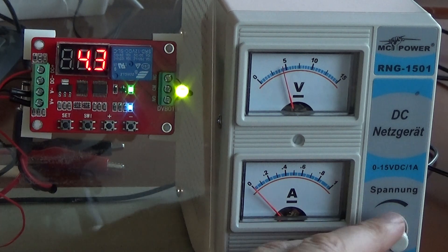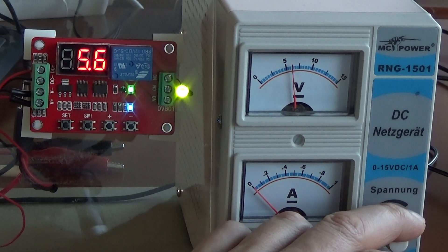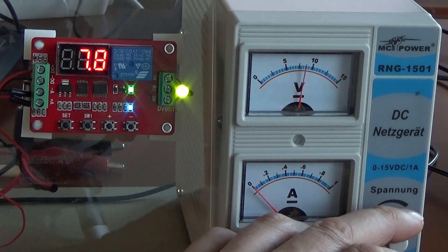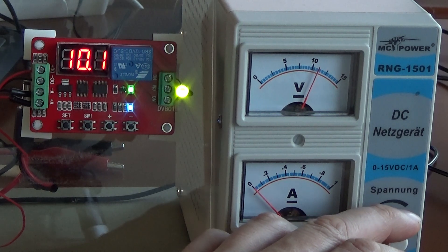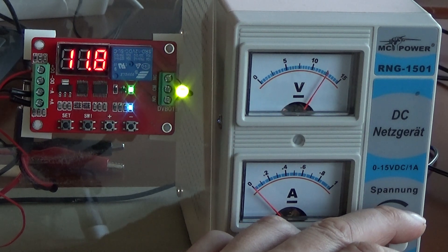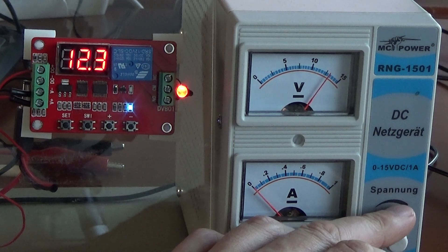Let's look at the relay. I am currently at 4.3 volts. If I go up to 10 volts, you can see nothing will happen. But when it reaches 12 volts, then the relay will be inactive.